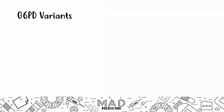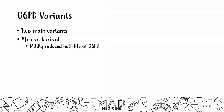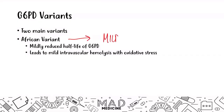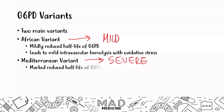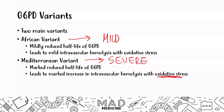There are two main variants of G6PD deficiency. The African variant is the mild form — it has a mildly reduced half-life of G6PD, so you're still producing NADPH but not as much, leading to mild intravascular hemolysis with oxidative stress. The Mediterranean variant is the severe form — it has a very marked reduction in the half-life of G6PD, leading to significantly increased intravascular hemolysis and more severe symptoms when patients are exposed to oxidative stress.